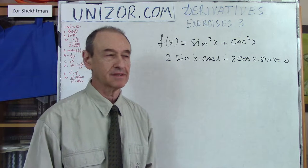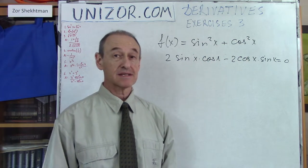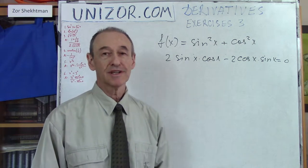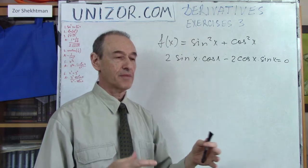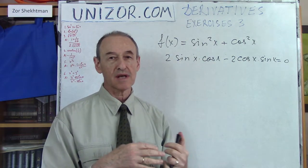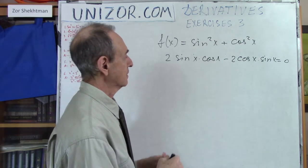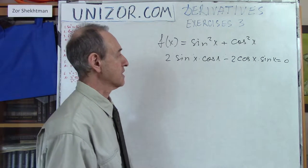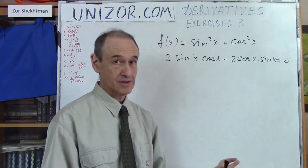Someone might ask: can this confirm that sin²x + cos²x is some kind of constant? Absolutely not. All the rules about derivatives of sine and cosine are based on properties of sine and cosine, and the fact that sin²x + cos²x equals one is much closer to the definition of sine and cosine than taking derivatives. It would be a logical loop to say that because the derivative is zero, therefore it's constant.